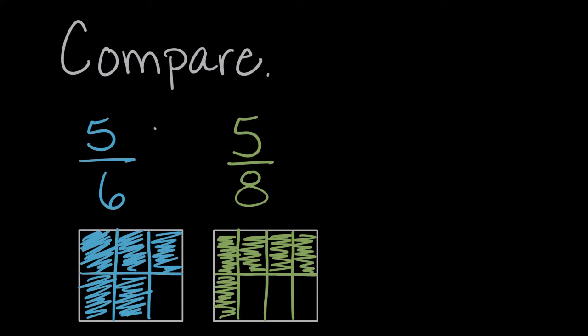or is greater than. And remember with our symbol, the open side, the larger side, should be facing our larger number. So five sixths is greater than five eighths.